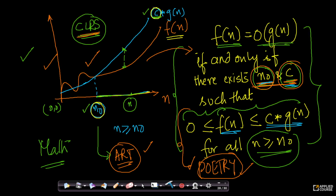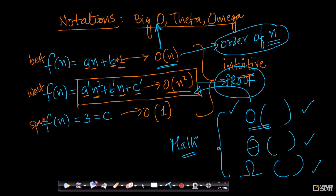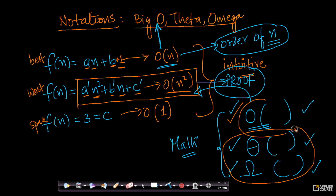This is the definition of what order of n means. In the next video, there are two more notations: theta and big omega. The most used amongst these notations is big O, which is extensively used. Understanding theta and omega will be straightforward if you have understood this — we will discuss those in the next video.